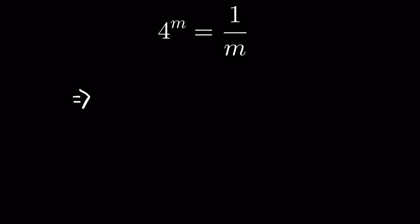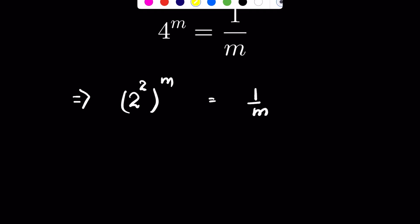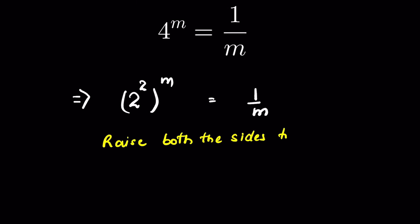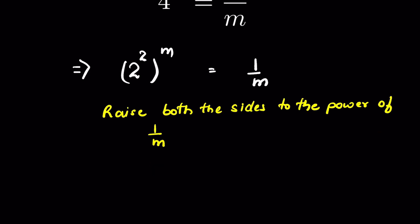4 raised to the power m is equal to 1 upon m — we have to find the value of m. We can write 4 as 2 raised to the power 2, so this becomes 2 raised to the power 2, whole raised to the power m, equal to 1 upon m. Now let's raise both sides to the power of 1 upon m.